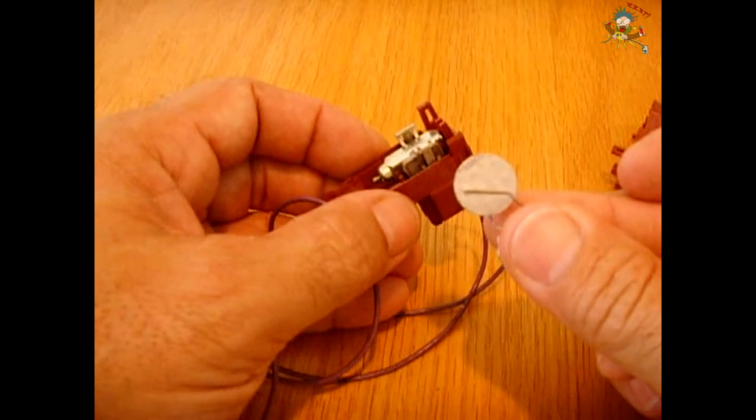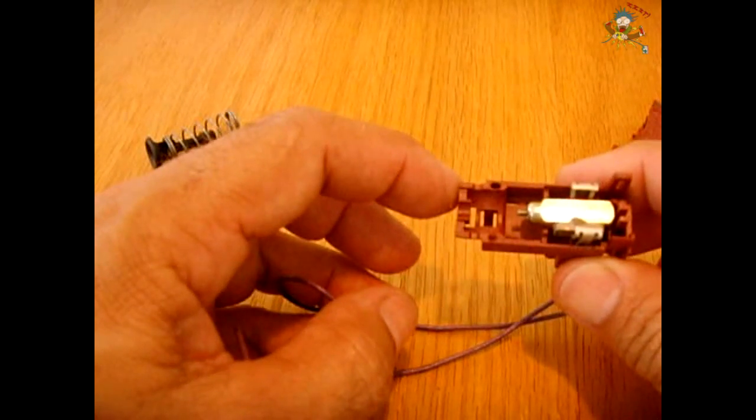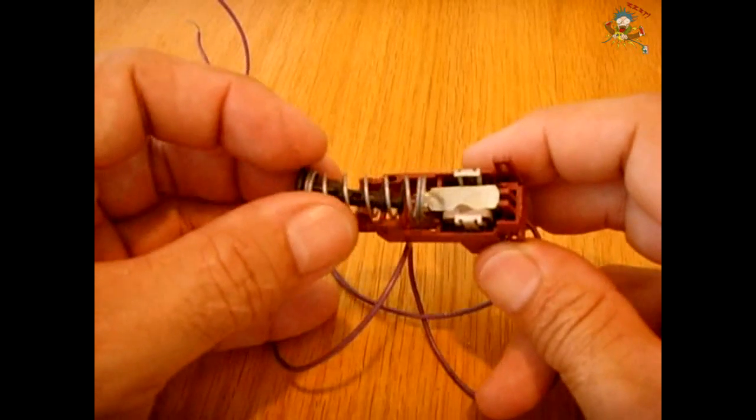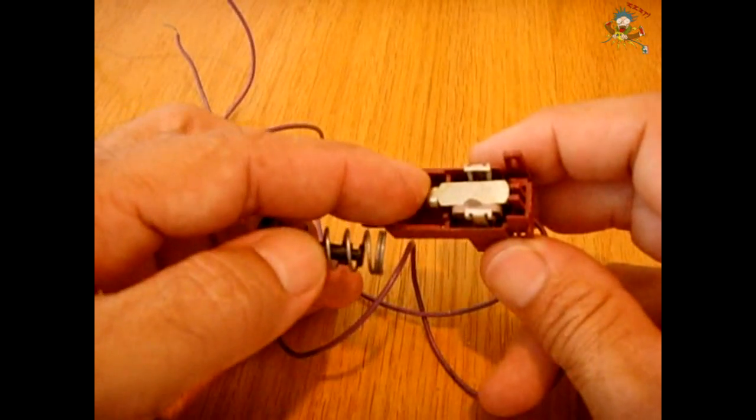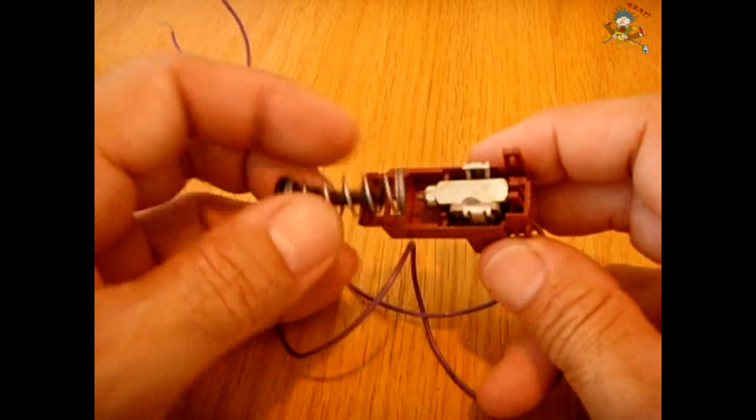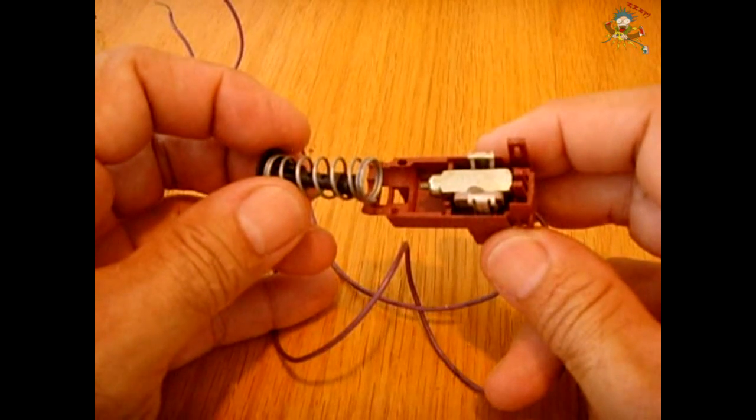As this heats up the current will begin to drop off and the piston will remain in its furthest position out. The only purpose of the spring is once the unit cools off again, it helps push the piston all the way back into the starting point so it's ready to extend the next time it's heated. Hopefully now you have a good understanding of how a wax motor works.